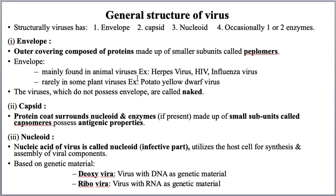Examples of animal viruses with envelope: herpes virus, HIV virus (which causes AIDS), and influenza virus. In some plant viruses, like potato yellow dwarf virus, envelope can be seen. Most plant viruses don't have an envelope. Viruses without an envelope are called naked viruses.